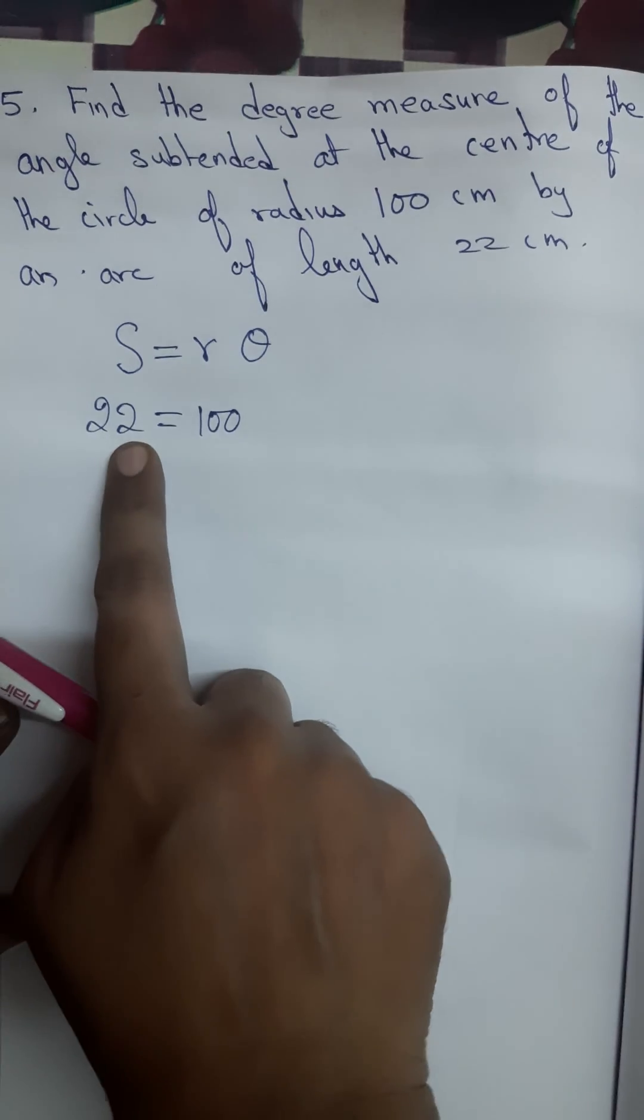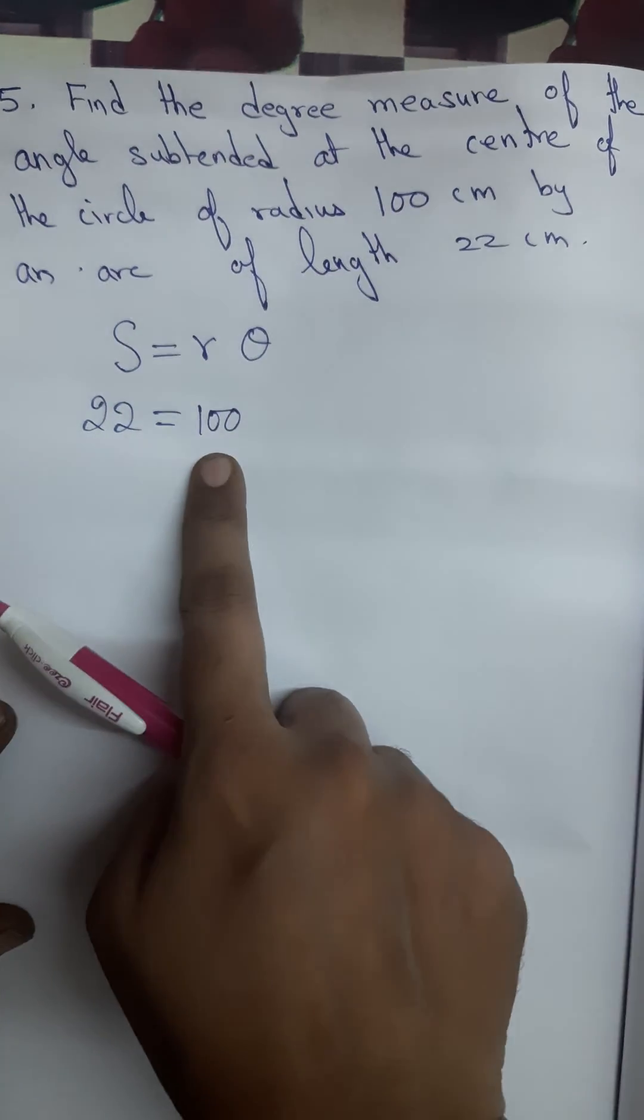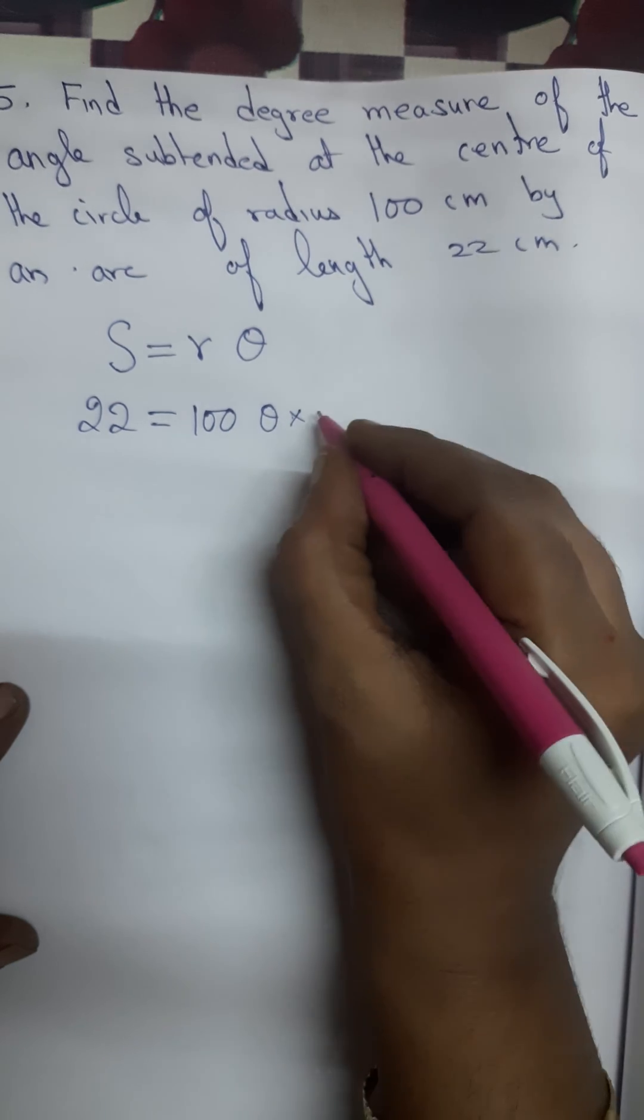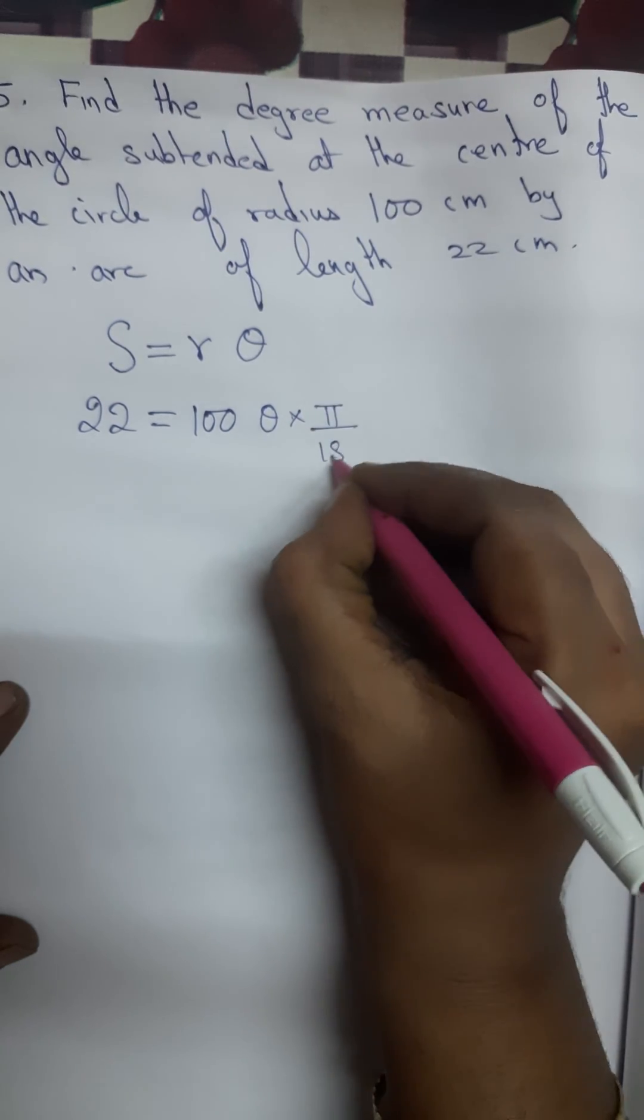Where s is there we are writing 22, where r we are writing 100. This theta we are converting into degrees, so we are writing it as theta into pi by 180.